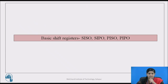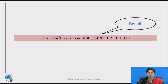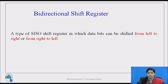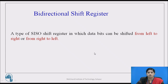Before moving towards the concept of bi-directional shift register, you have to recall the basics of shift registers and their basic modes of operation like SISO, SIPO, PISO, and PIPO. The bi-directional shift register is a type of shift register in which data bits can be shifted either from left to right or from right to left, bit by bit. Serial in and serial out, shift left and shift right operations are allowed.